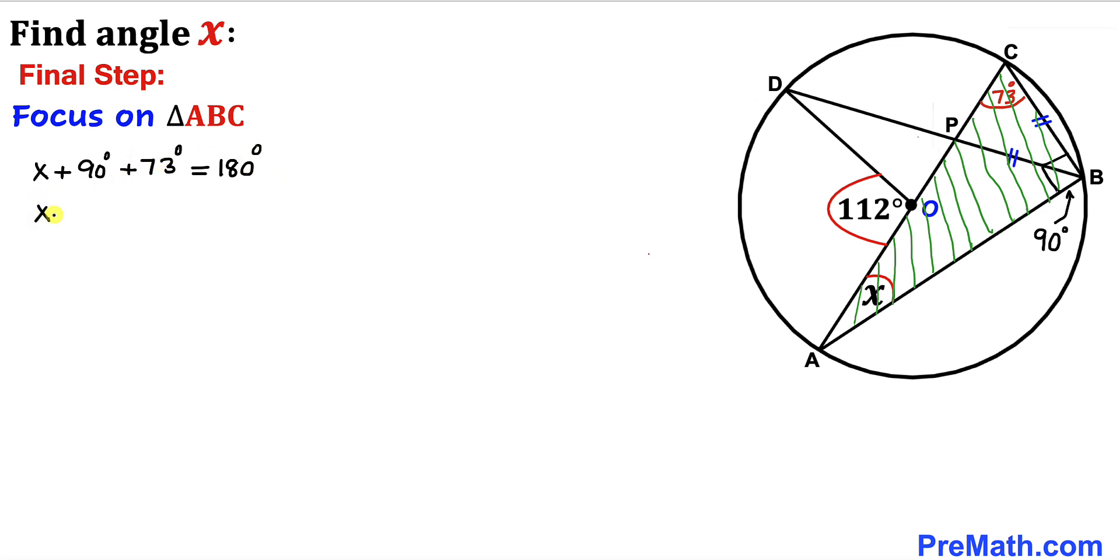Let's combine the like terms. We have x plus 163 degrees equals 180 degrees. Now let's subtract 163 degrees from both sides. Therefore, angle x turns out to be 17 degrees.